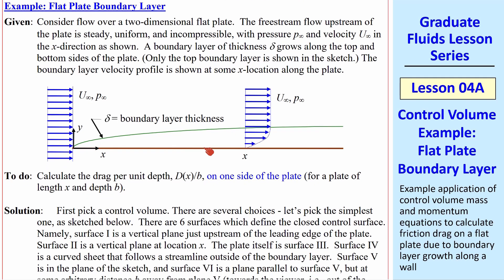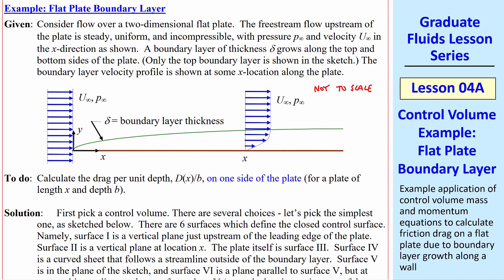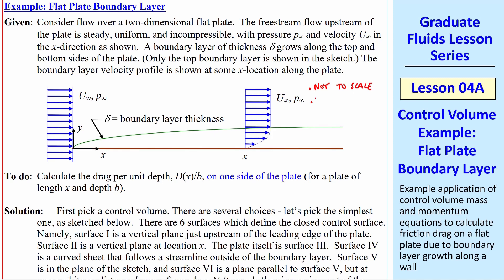Here's the setup. We have a 2D flat plate. The flow coming in is uniform at U∞ with constant pressure P∞. We're showing only one side of the plate where the boundary layer grows. Note that this is not to scale — the actual boundary layer will be extremely thin. We also note that we're talking about laminar flow. We want to calculate the drag per unit depth, which is a function of X location. The farther we go down the plate, the larger D becomes, and B is the depth of the plate into the page.